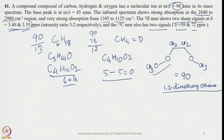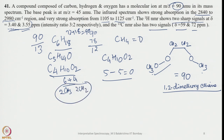To summarize the approach: from the mass we calculate C4H10O2. The 10 hydrogens in a 3:2 ratio give 6 and 4, consistent with 2 CH3 and 1 CH2–CH2 units. The 13C shows 2 signals at 59 and 72 ppm — both deshielded, confirming oxygen neighbors. The 1H NMR signal at 3.55 is for the methylene and 3.40 for the methyl group. All data confirm this is 1,2-dimethoxyethane.